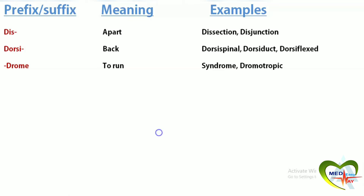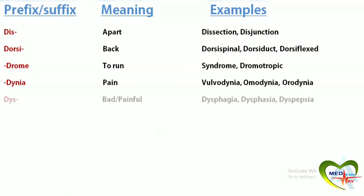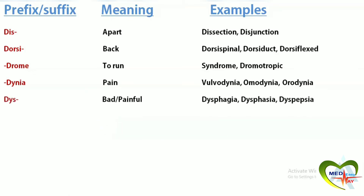Dynia means pain. Vulvodynia is pain in the vagina. Homoдynia is pain in the shoulder. Orodynia is pain in the mouth. Dys means bad or painful. Dysphagia is difficulty in swallowing. Dysphasia is difficulty in speech. Dyspepsia is difficulty in digestion.